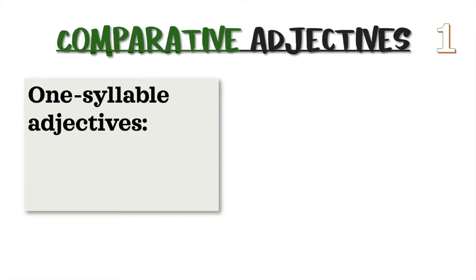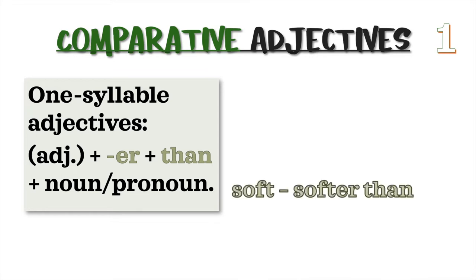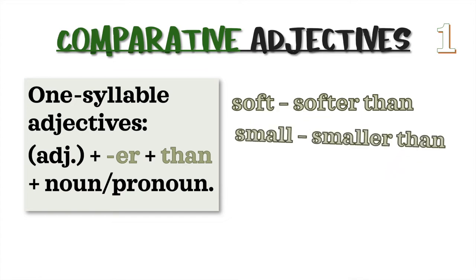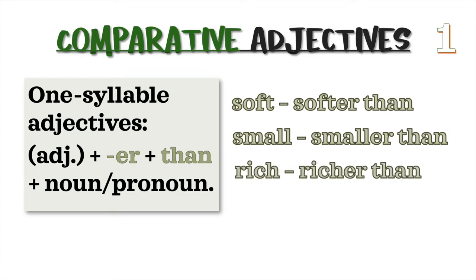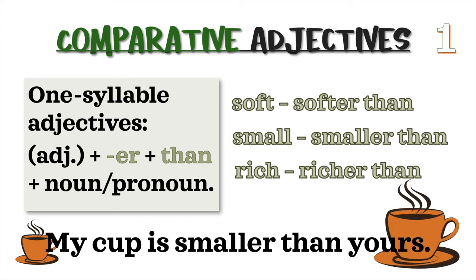Rule 1: One syllable adjectives. The formula is adjective plus -er plus than, plus noun or pronoun. For example: soft → softer than; small → smaller than; rich → richer than. Example sentence: My cup is smaller than yours.